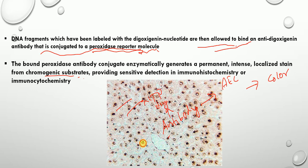After applying the chromogenic substrate and visualizing under the microscope, you can see that the stained nuclei indicate apoptotic cells. This is a very important test. I hope this video was helpful — thank you very much for your kind attention.